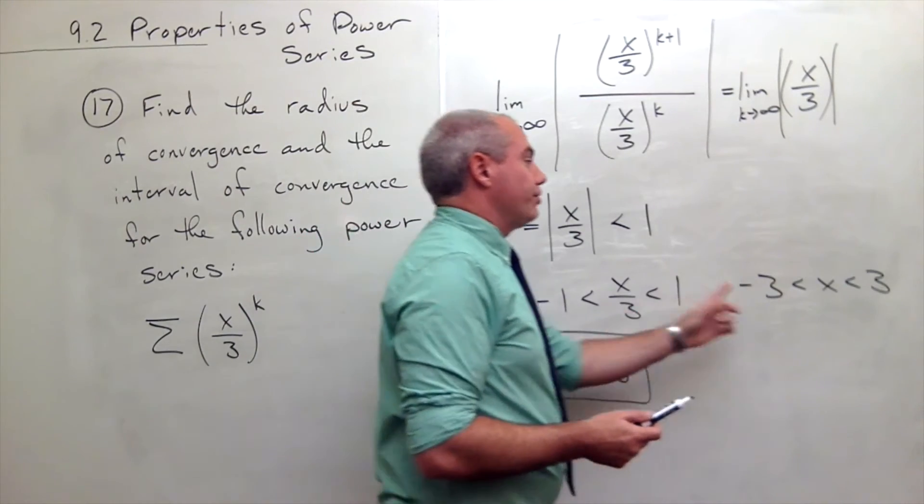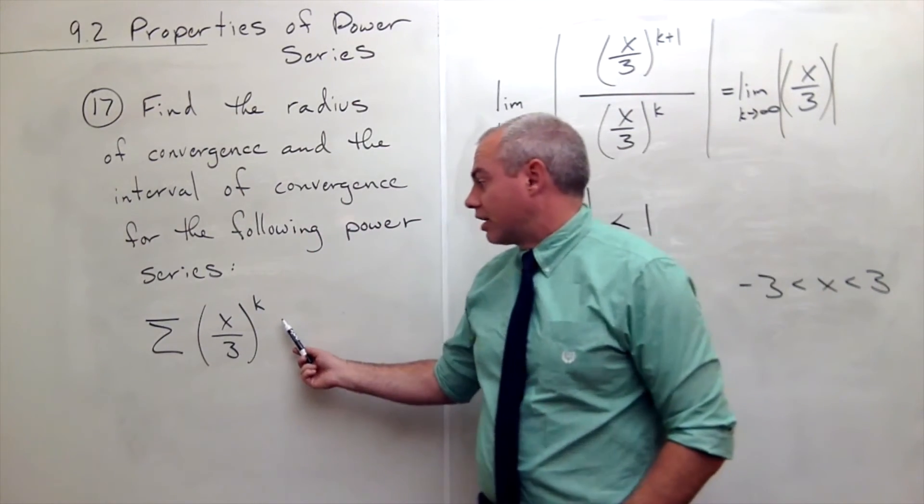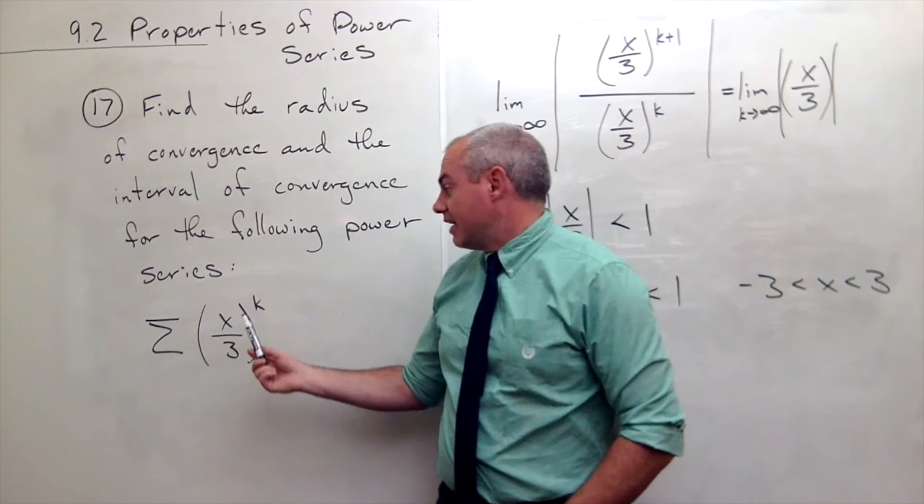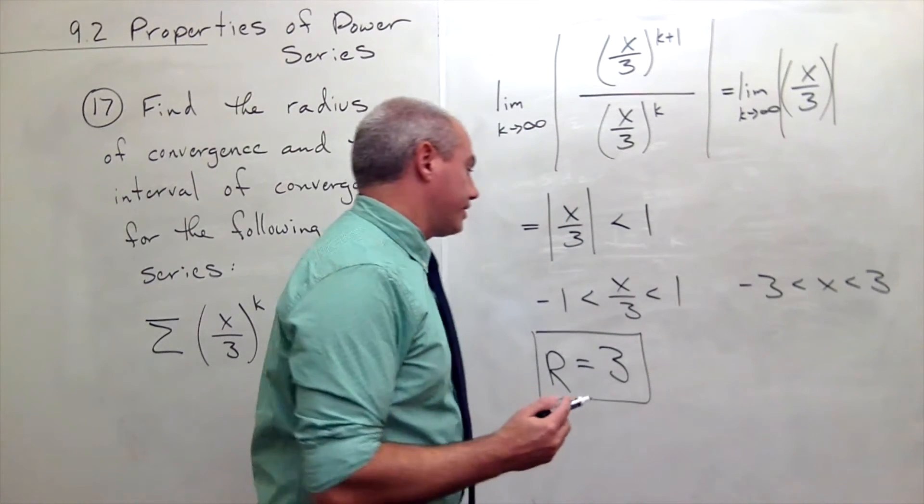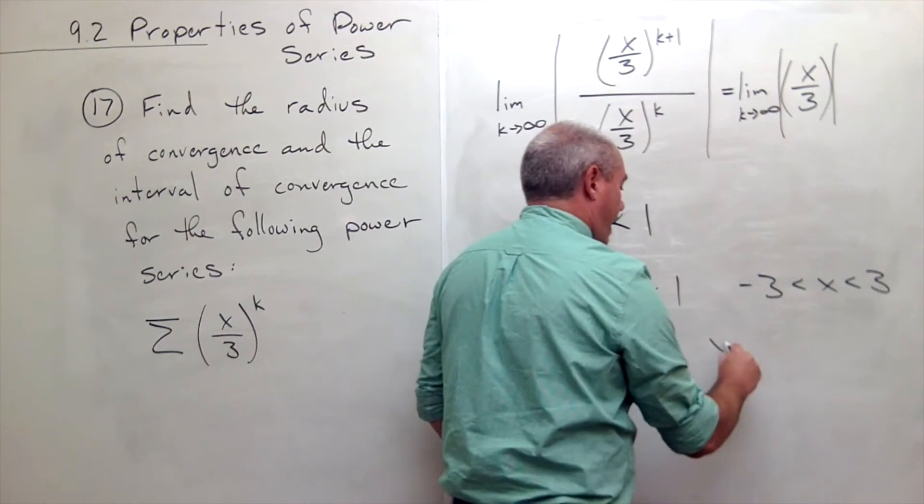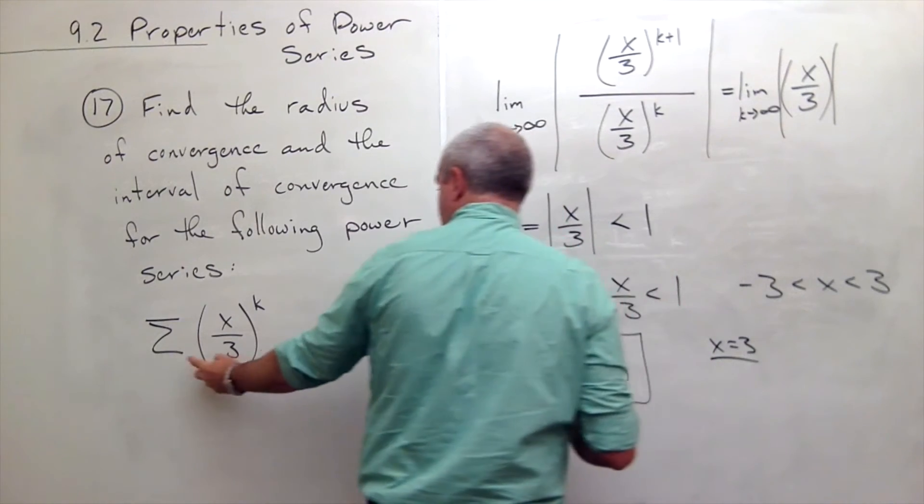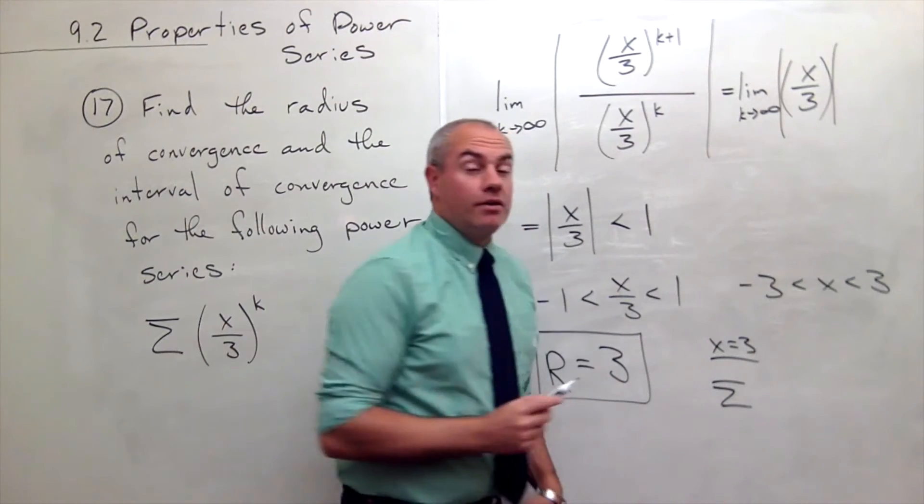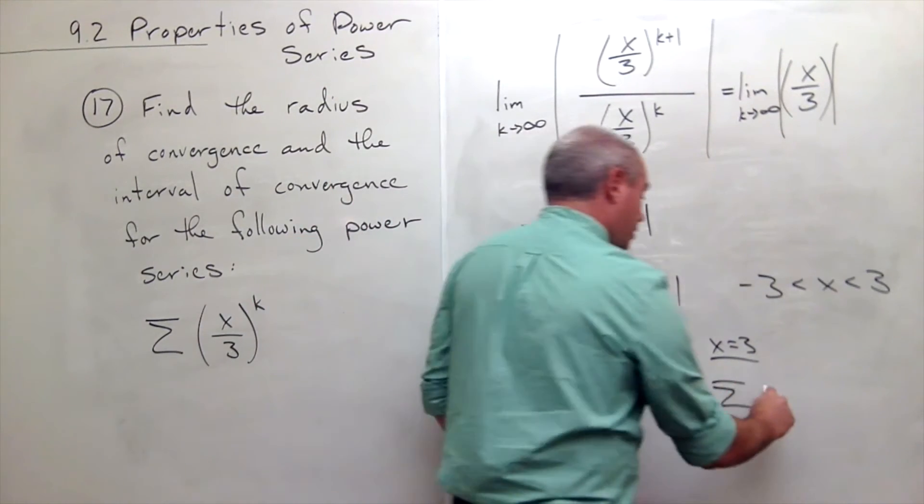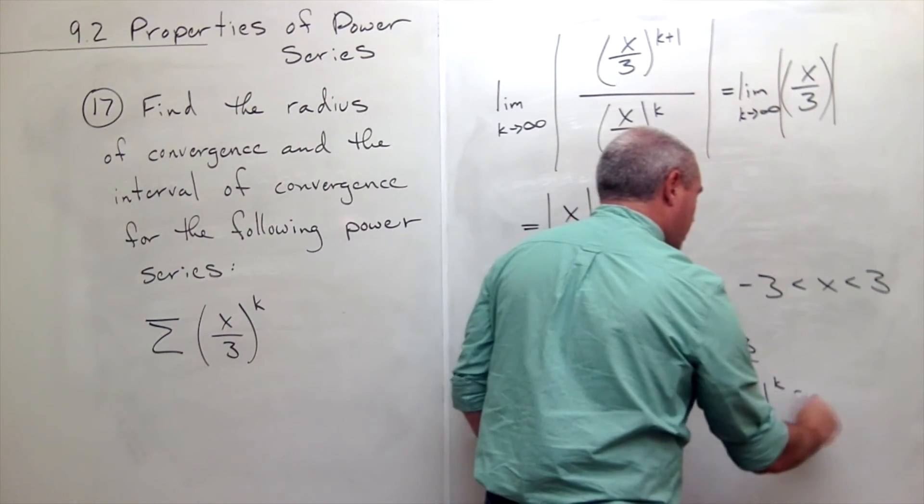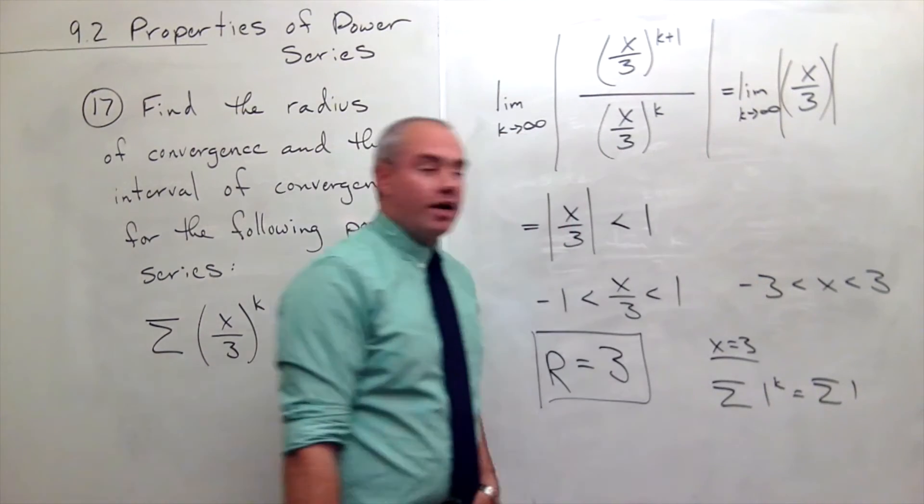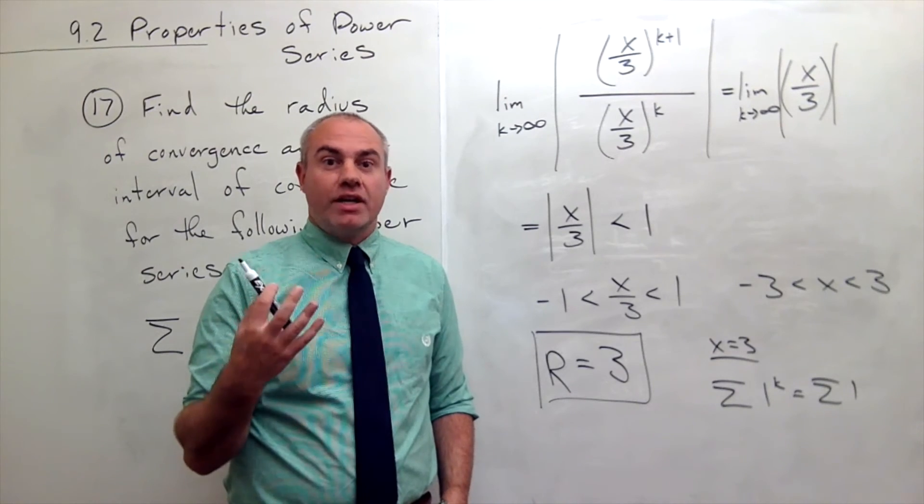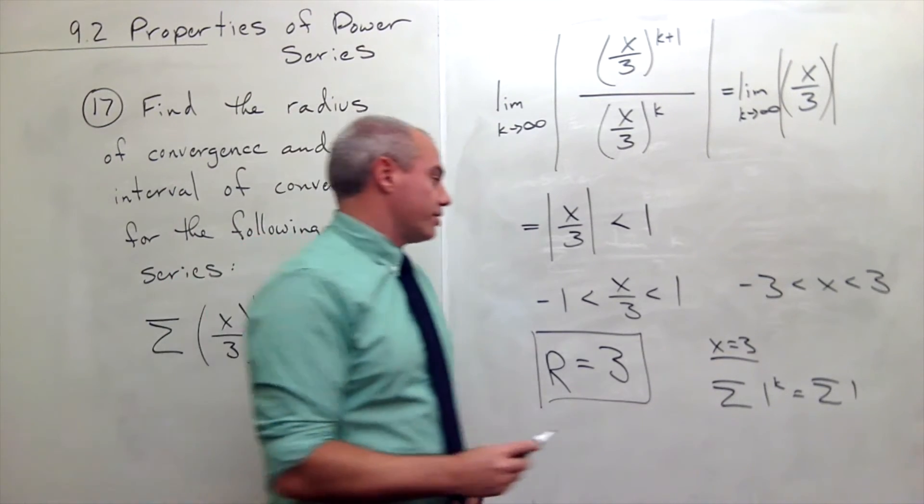What if we went back to the original series, and x was 3? If x was 3, let me write this down. If x is equal to 3, then the series we have is the sum of 3/3, which is 1, to the k. In other words, it's the sum of a bunch of 1s. The sum of a bunch of 1s is infinity, so it diverges.